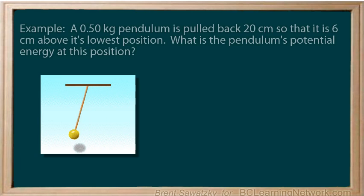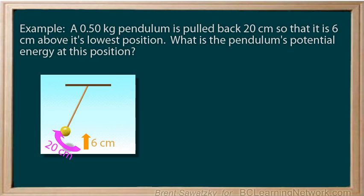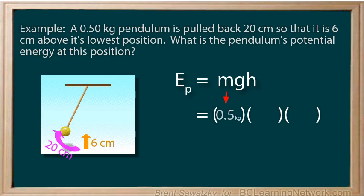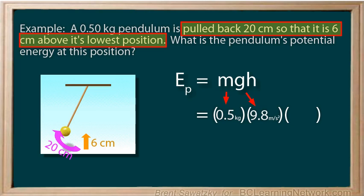Another example. A 0.5 kilogram pendulum is pulled back 20 centimeters, so that it is 6 centimeters above its lowest position. What is the pendulum's potential energy at this position? Because this is certainly a gravitational potential energy problem, we're pushing against gravity. Let's use our formula Ep equals mgh. And let's replace all the variables with brackets. So we have 0.5 kilograms for mass, and 9.8 meters per second squared for g, and the height. Well, the height in this one isn't totally clear.